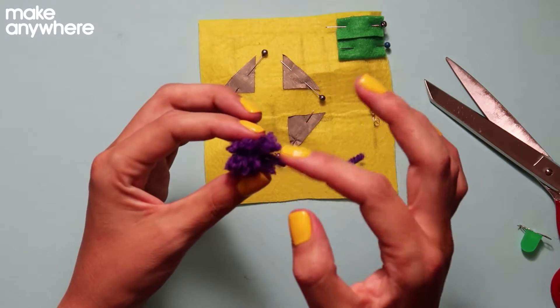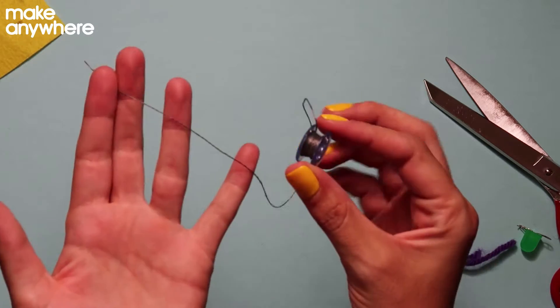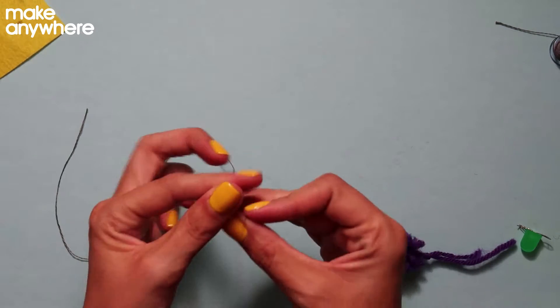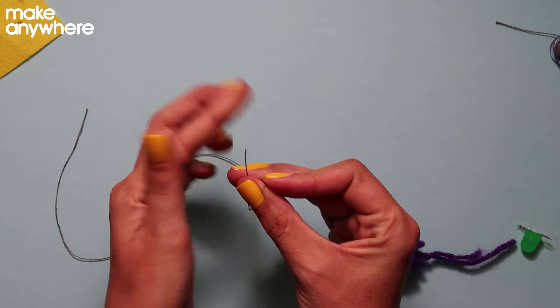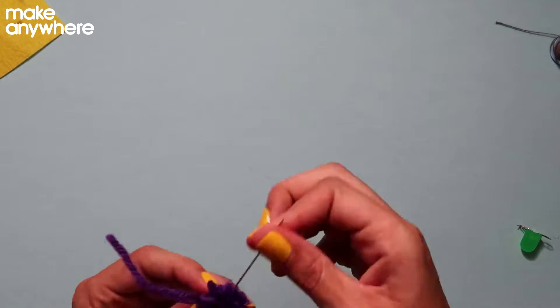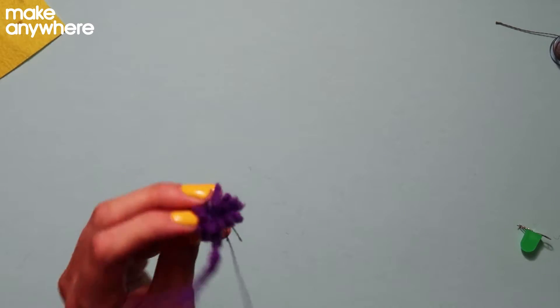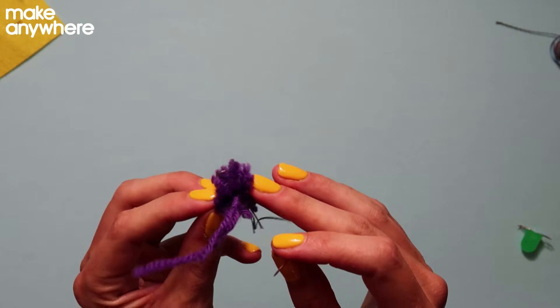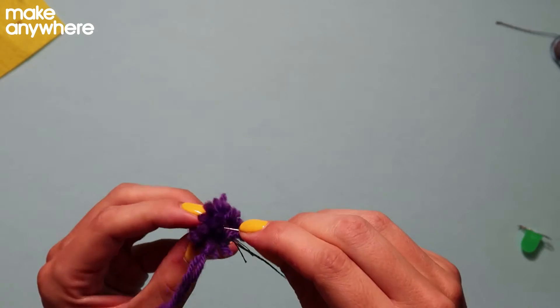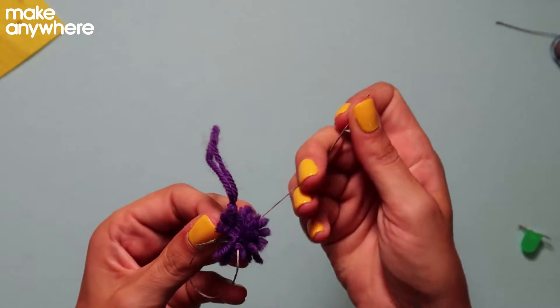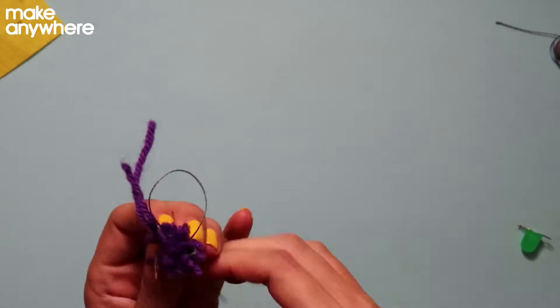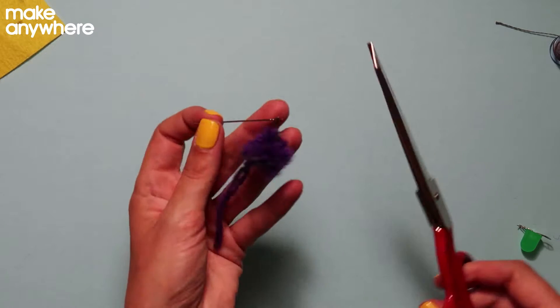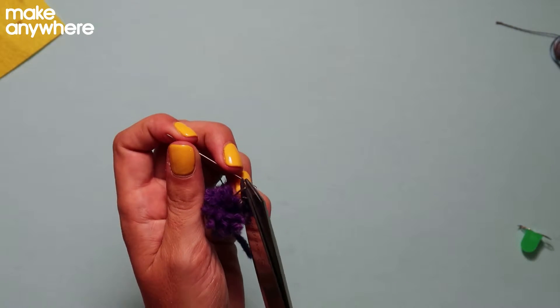So now we're going to add some conductive thread through this. We want these little loops to stick out just a little bit further than our wool. And just randomly poke it through until you've used up all your threads, and then snap.